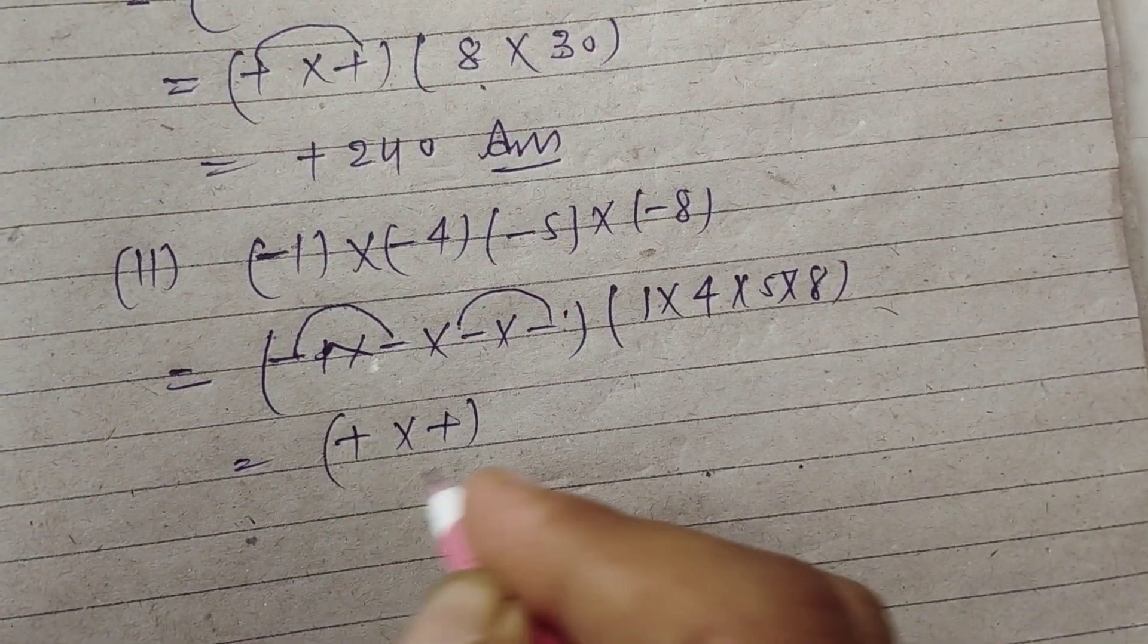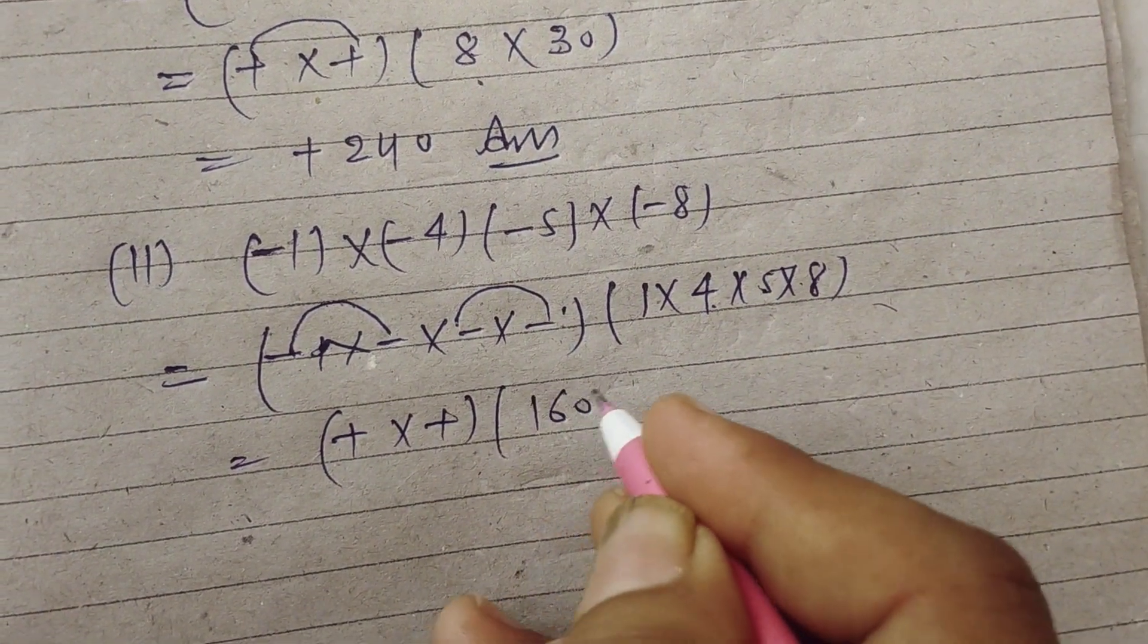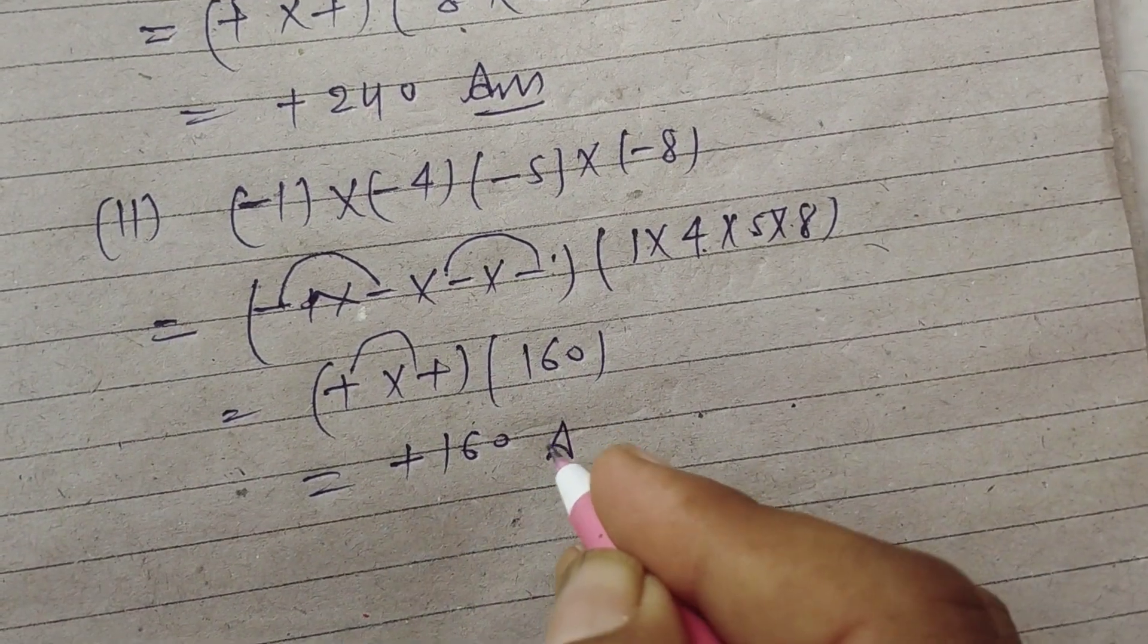So plus into plus. This is 4, then 5 into 20, 20 into 8 is 160. And this is plus 160, answer.